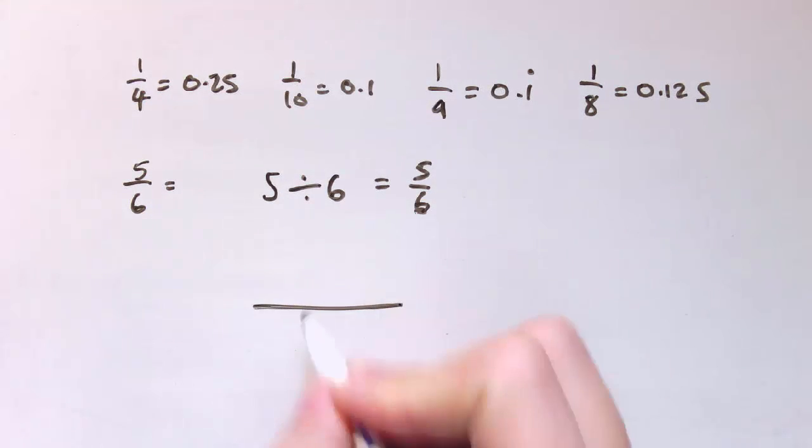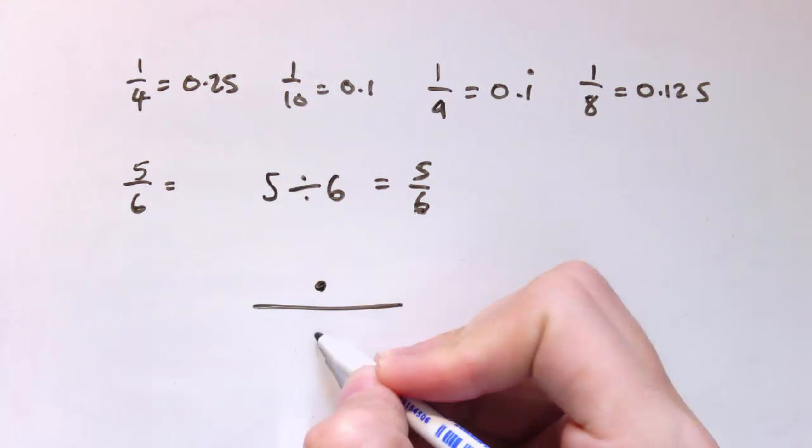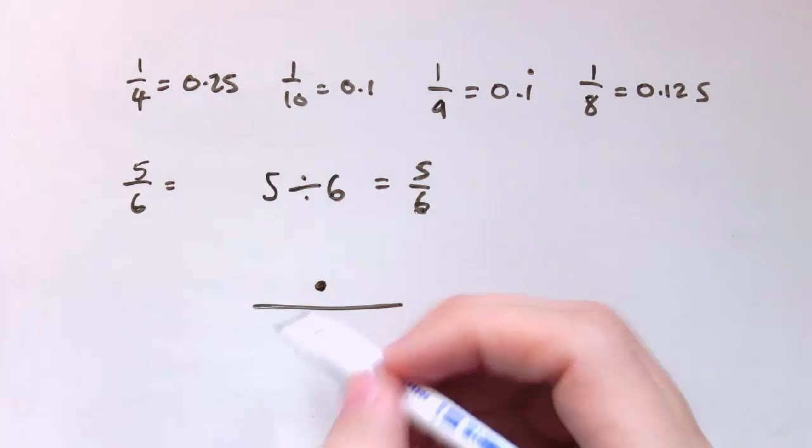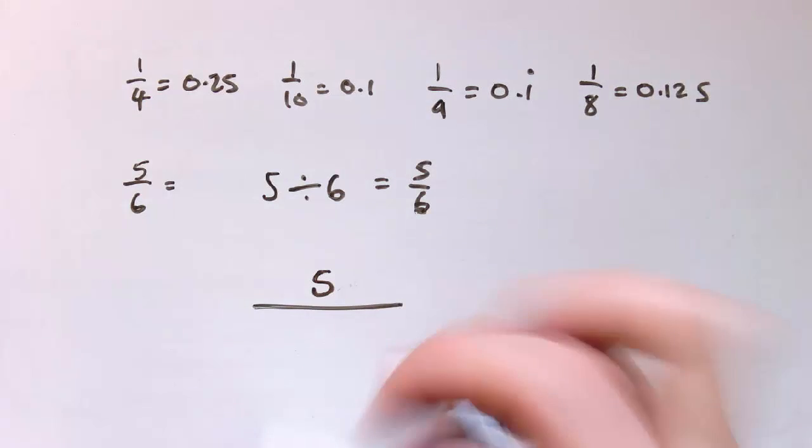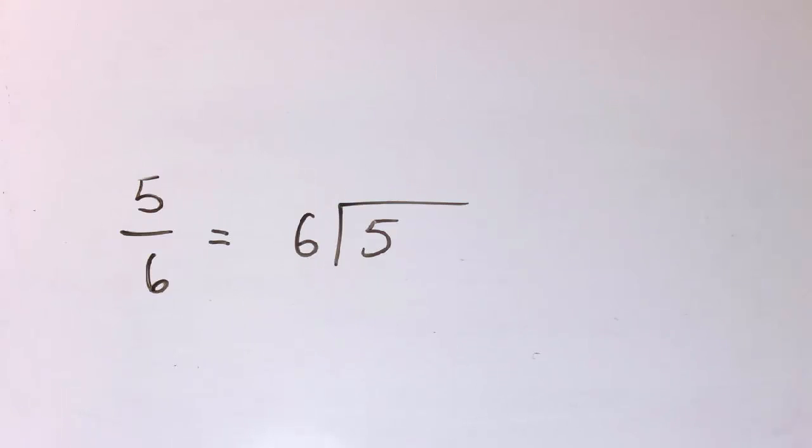If you think about the division sign, it's a line and it's got two spaces, top and bottom, to be replaced with the numbers. So on the top we can replace it with the 5, and on the bottom we replace it with the 6. And that's what division is. So let's do it as a long division. Let's do 5 divided by 6.